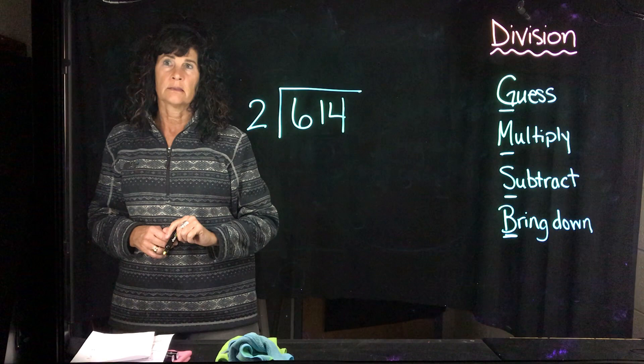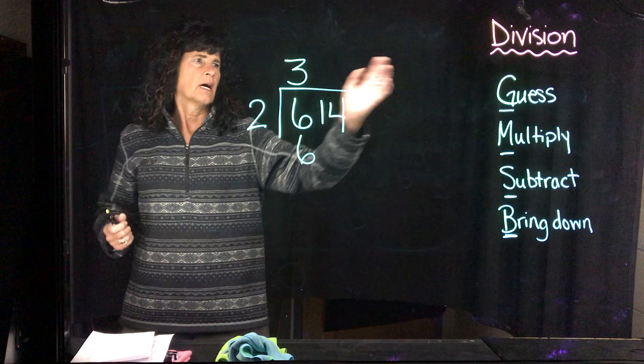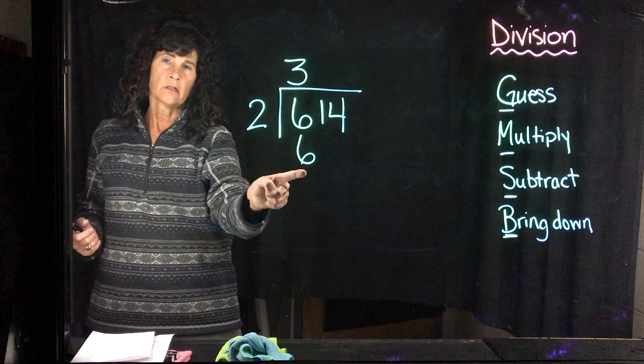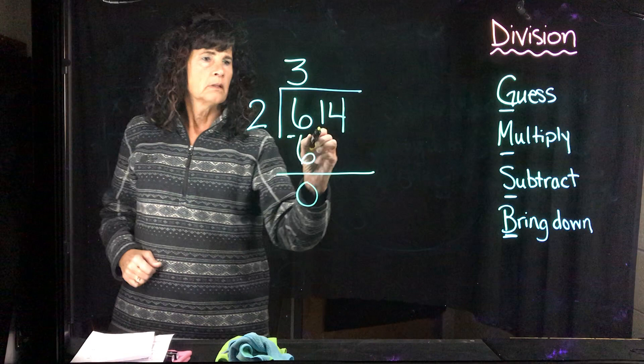Alright, first things first. I guess. How many twos can fit into 6? I think 3. Alright, 3 times 2 is 6. I'm going to multiply, right? I guessed a 3. I multiplied what I guessed by the divisor and got 6. Now I'm going to subtract and I get 0. Now I need to bring down the next number.